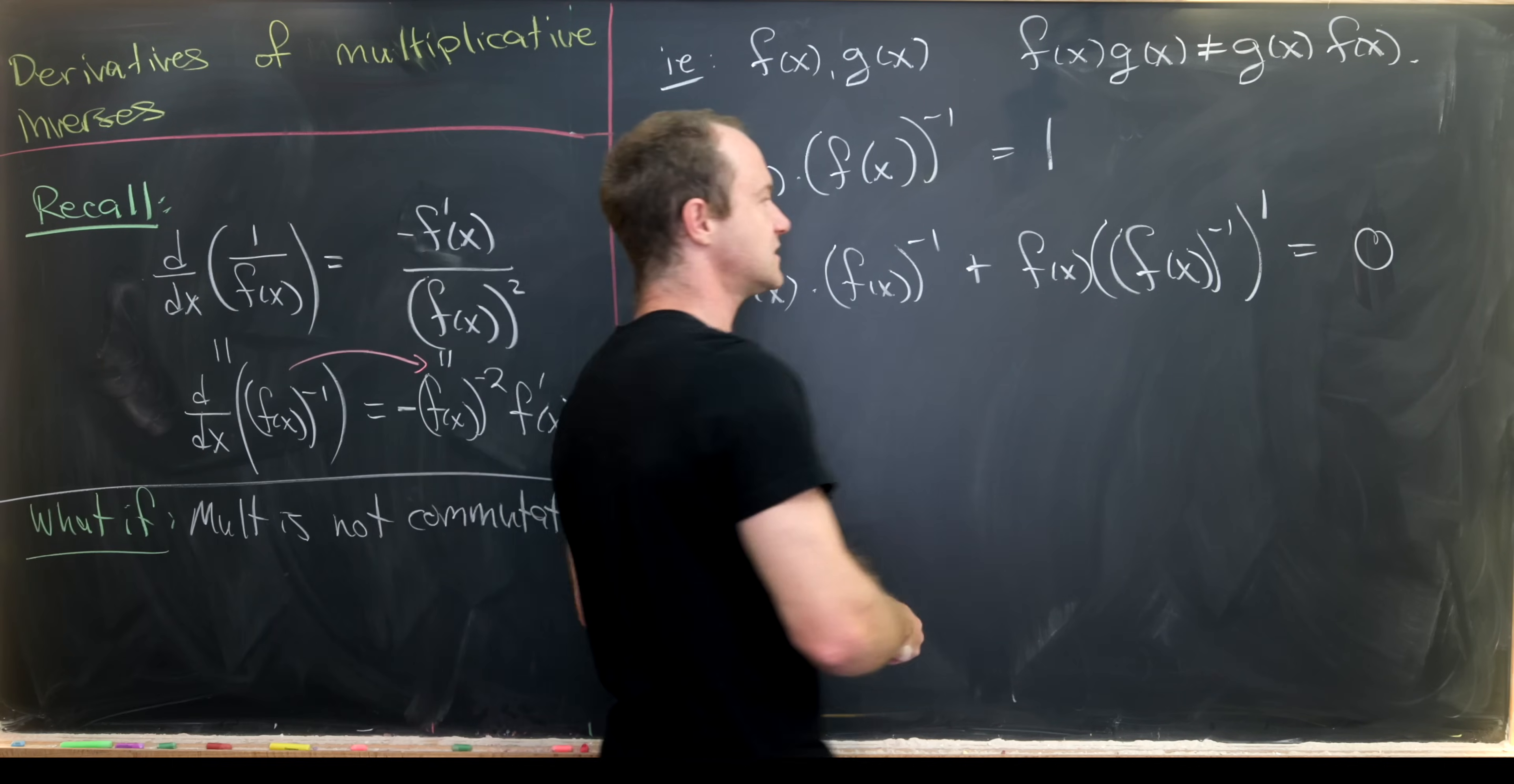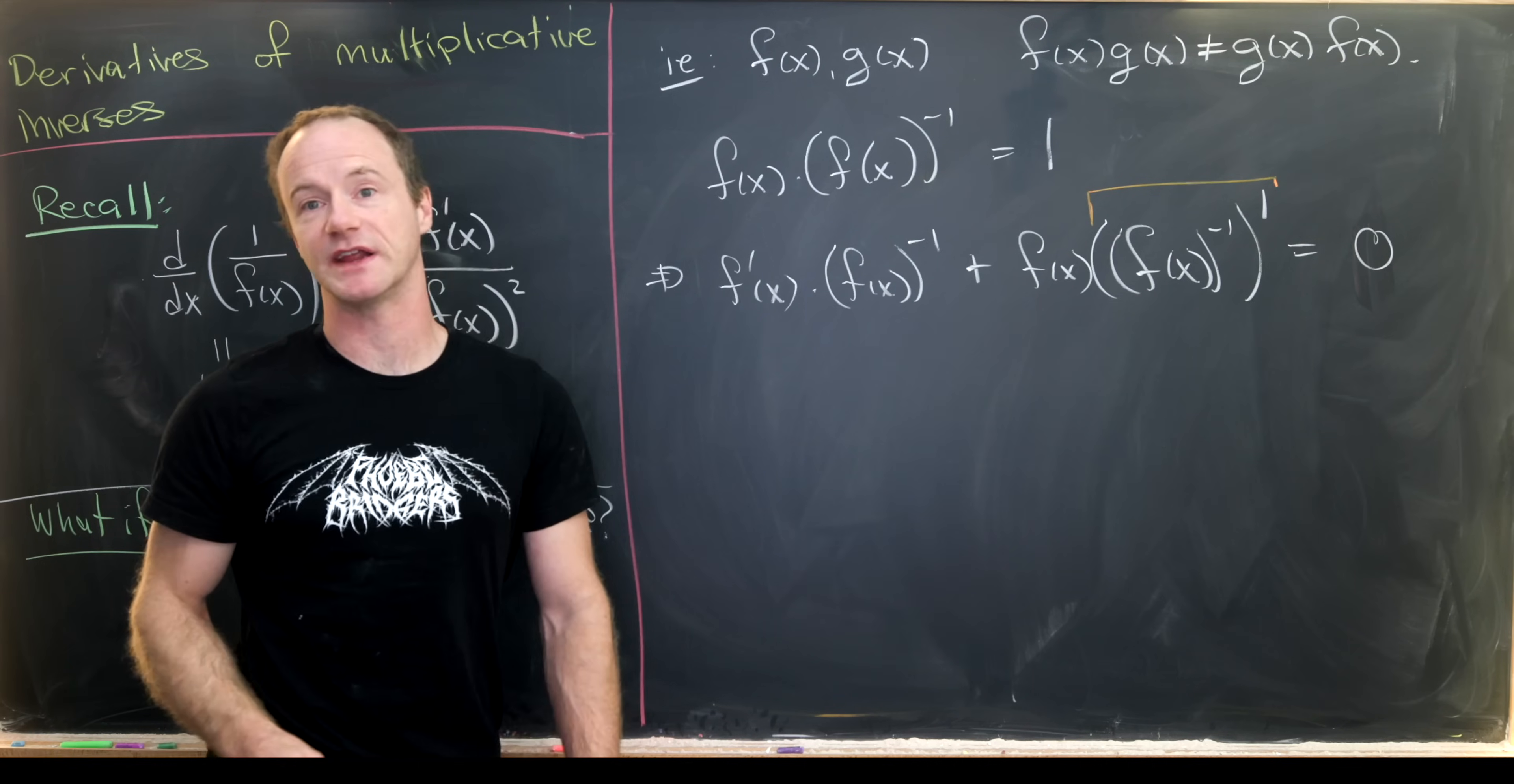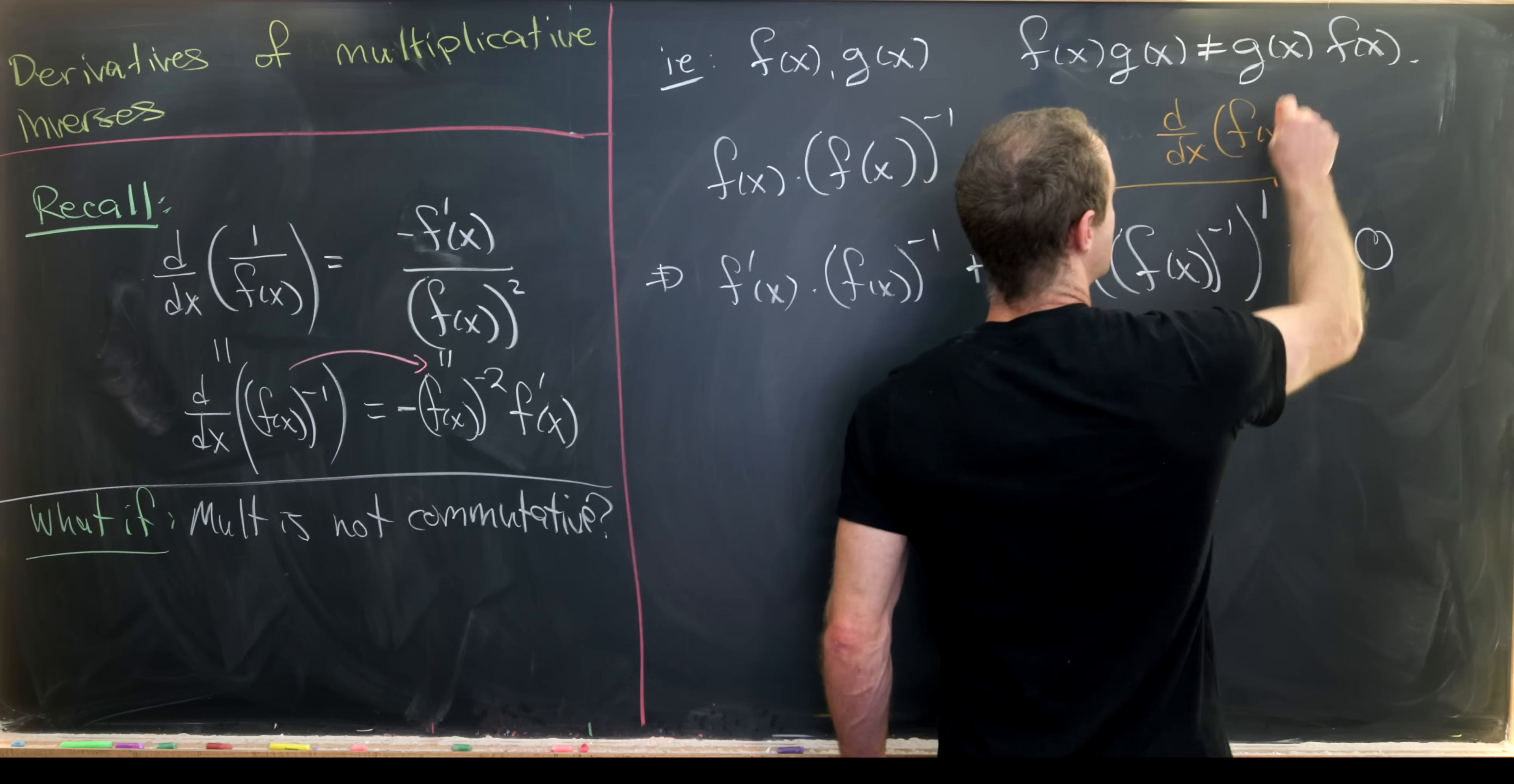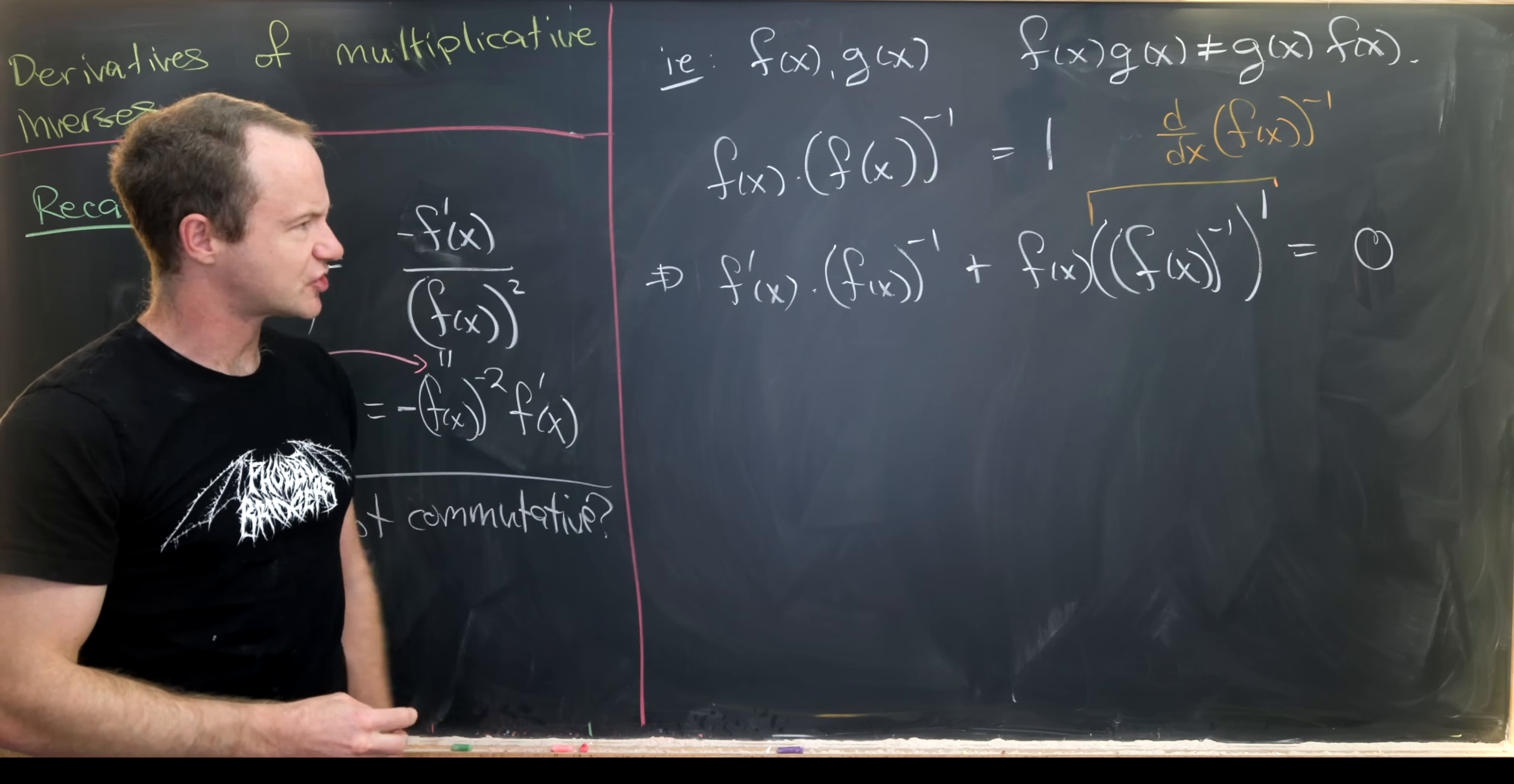This looks a little messy right here, but this is the object that we're in fact wanting to get at. This would be our derivative with respect to x of f(x) to the negative 1st power. So let's solve for that.